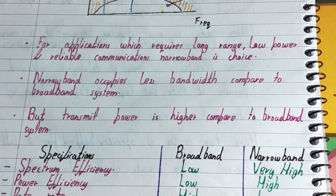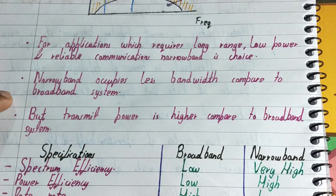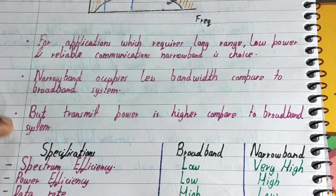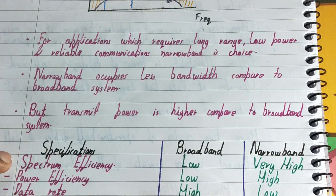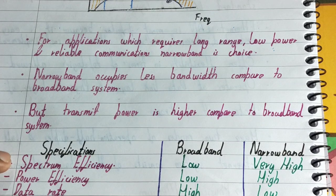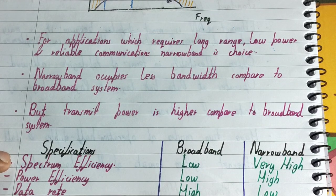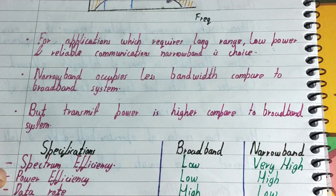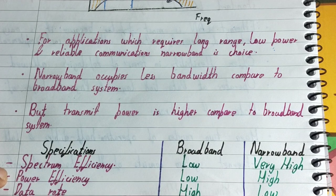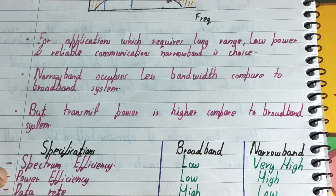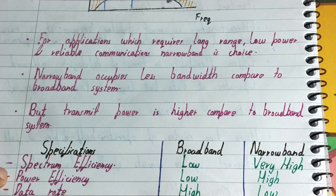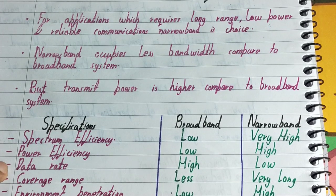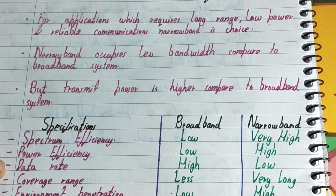Here is a chart showing the differences between narrowband and broadband. In terms of spectrum efficiency, broadband is low but narrowband is very high — which is what's needed for long distances. For power efficiency, which matters when using devices, broadband offers low power efficiency while narrowband offers higher power efficiency.